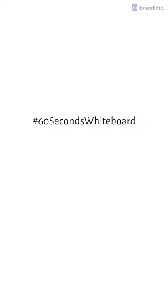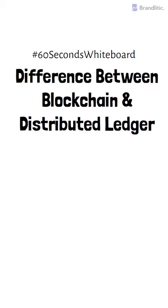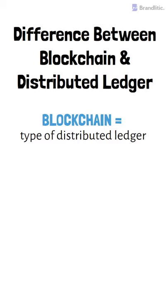Welcome to 60 Second Whiteboard. Today I'll be sharing with you the difference between blockchain and a distributed ledger. The most important difference to remember is that blockchain is just one type of distributed ledger. And although blockchain is a sequence of blocks, distributed ledgers do not require such a chain.